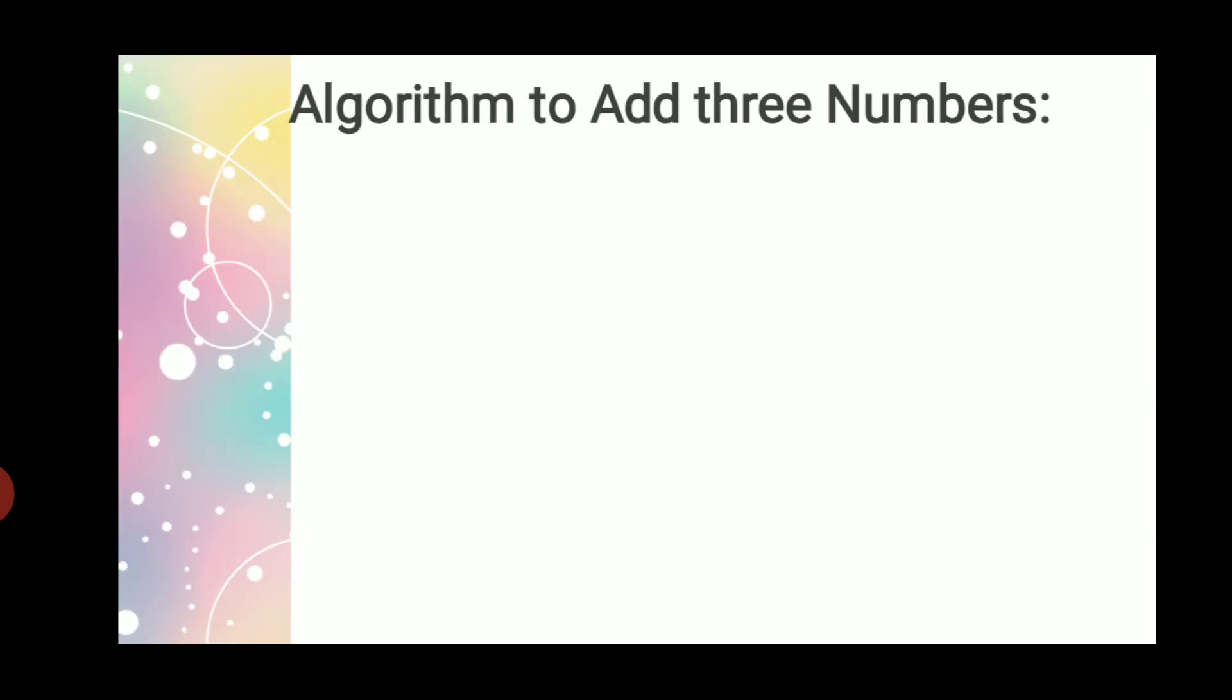Now here is an example in computer: how to add three numbers. How to write an algorithm to add three numbers? First of all, to add three numbers we want three numbers, right? So you have to take input and assume it as any alphabets or any word. Then you have to perform the addition operation.